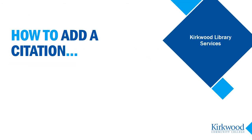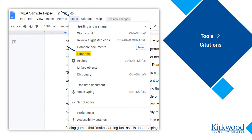To use the citation tool, open the Google Doc where you want to add citations. Go to Tools in the menu, then select Citations. You should see a sidebar open up along the right side of your document.